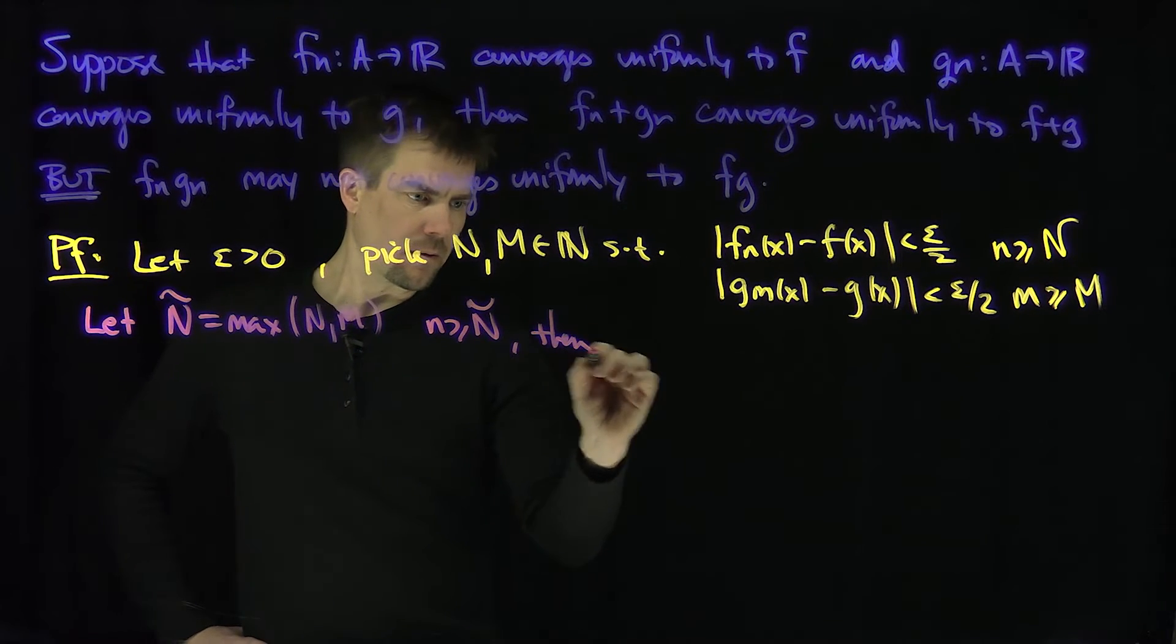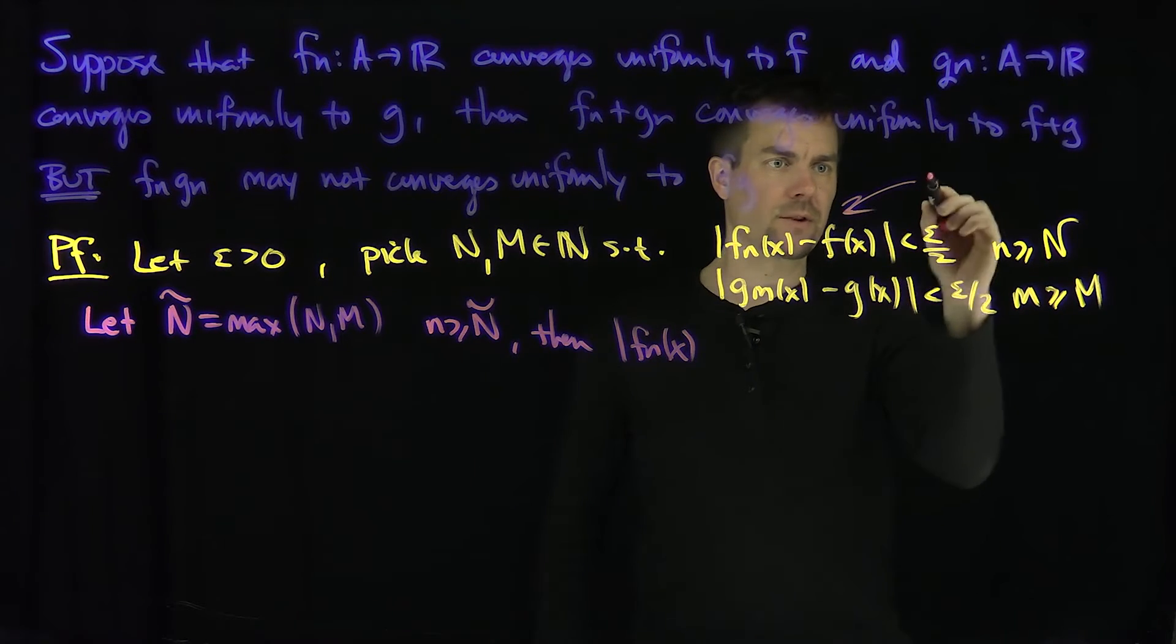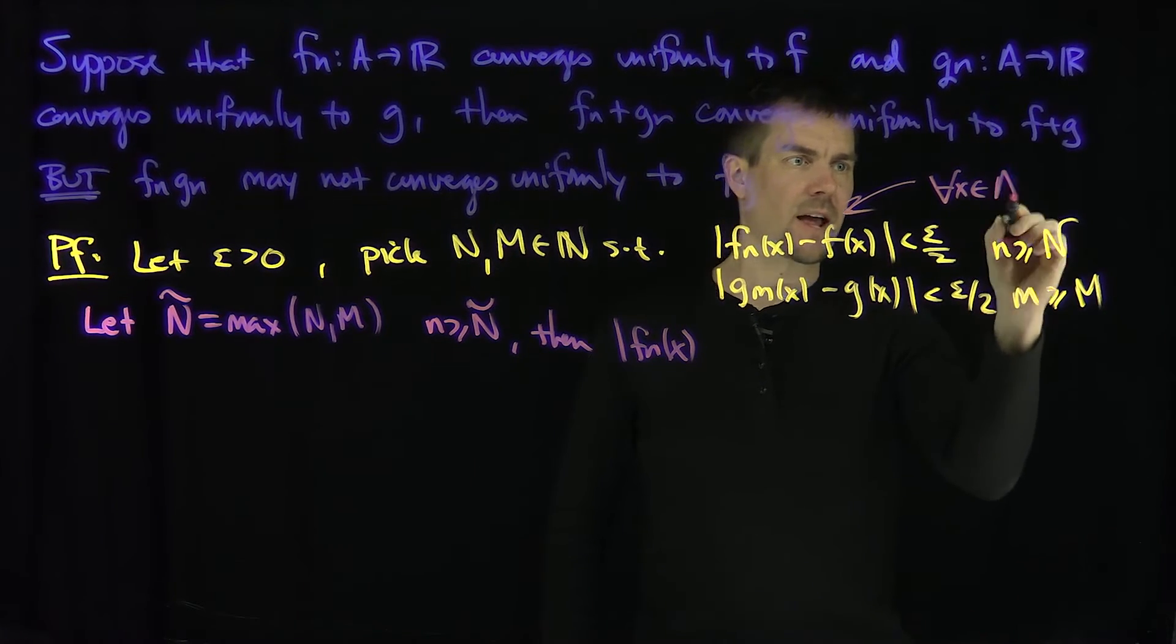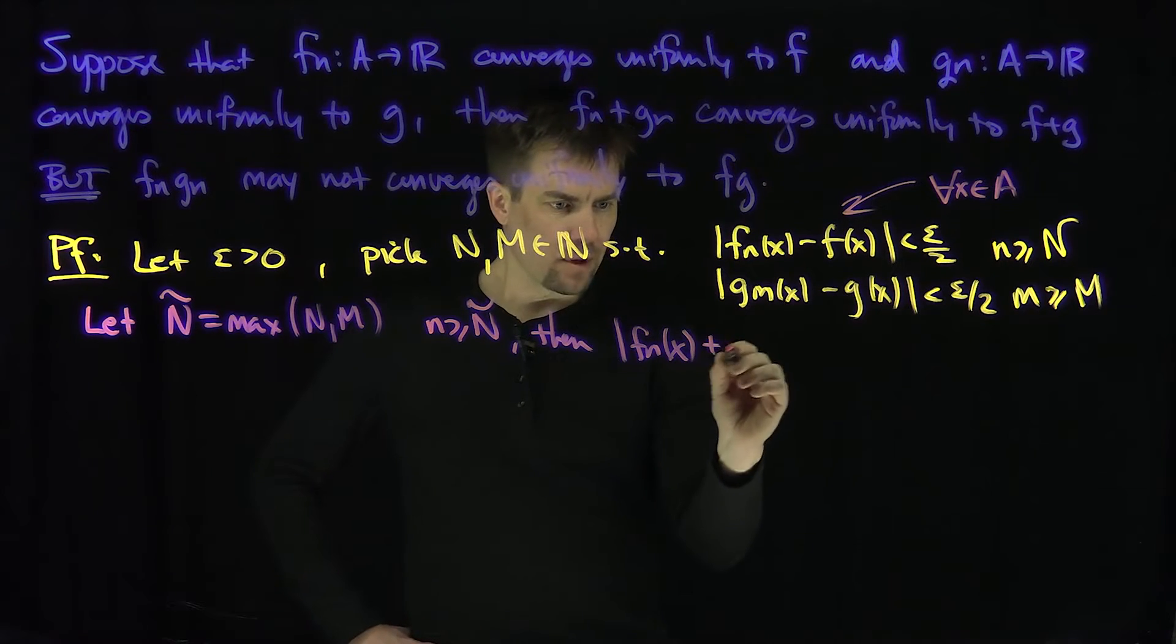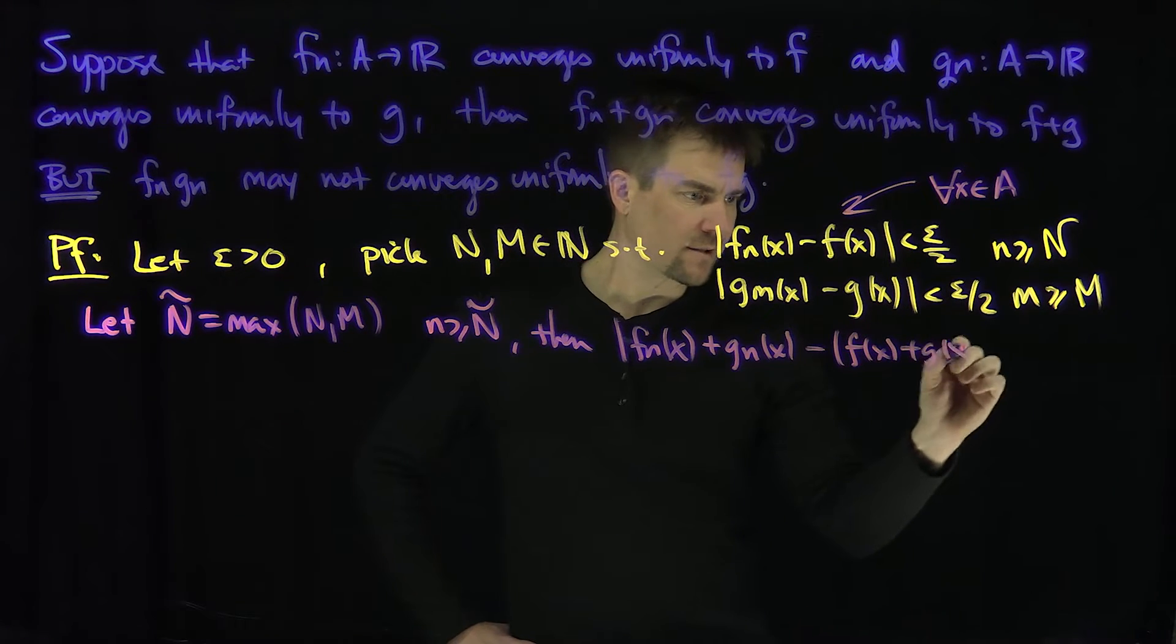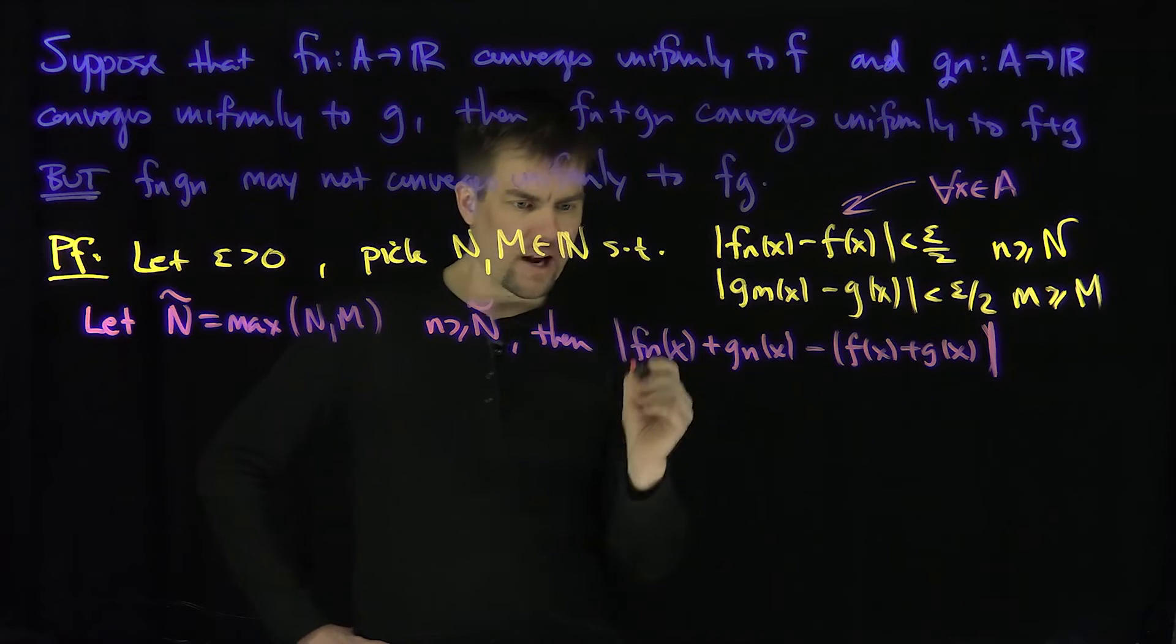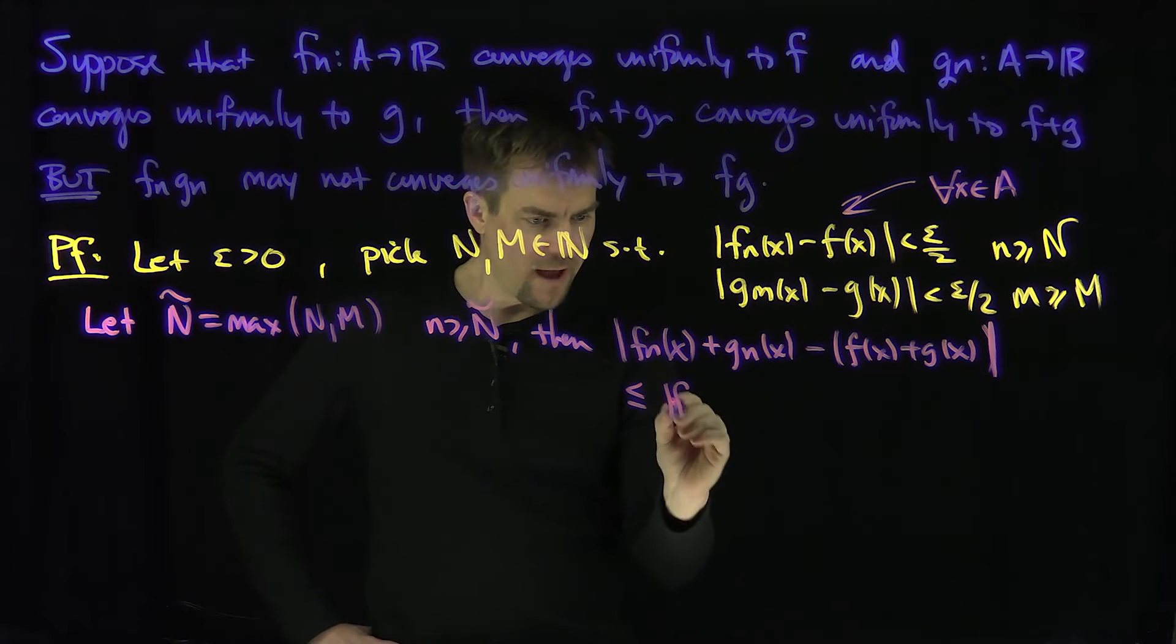Of course, these estimates are true for all x in the set A. Then |Fn(x) + Gn(x) - (F(x) + G(x))| is less than or equal to what?